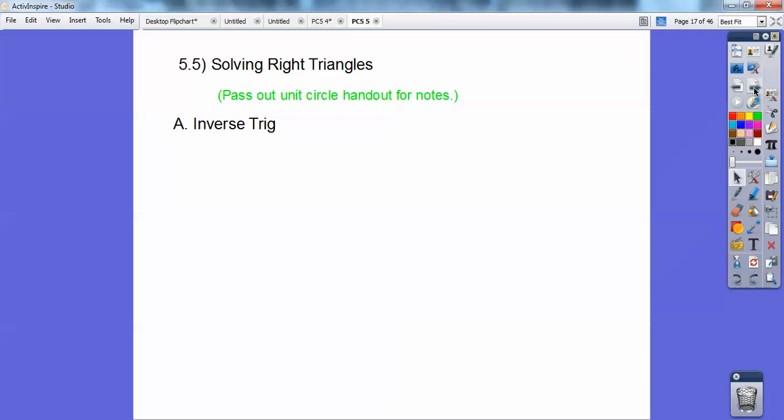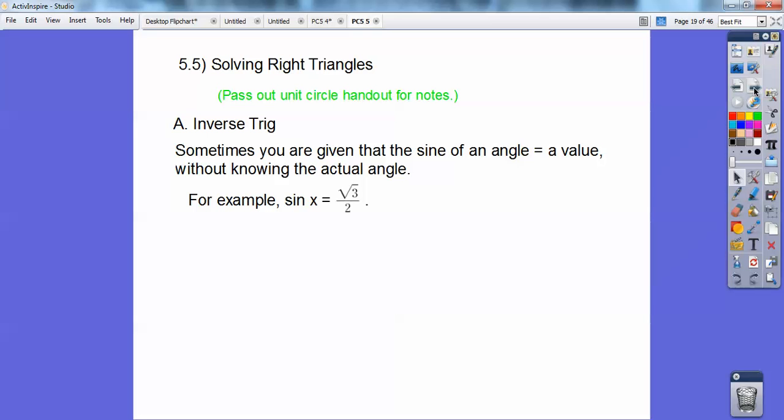So let's do a little bit of inverse trig. Sometimes you're going to be given the sine of an angle equals some value without knowing the actual angle. For example, if I said the sine of some angle X equals root 3 over 2, this can be written as arc sine, that this angle X is the arc sine of root 3 over 2. This is read that X is some angle whose sine is root 3 over 2.